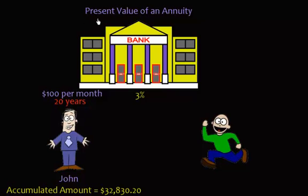But we're talking about present value of an annuity, and so here's how present value of an annuity works. So again, you have John who put in $100 per month for 20 years. How about this guy over here? We'll call him Bill.